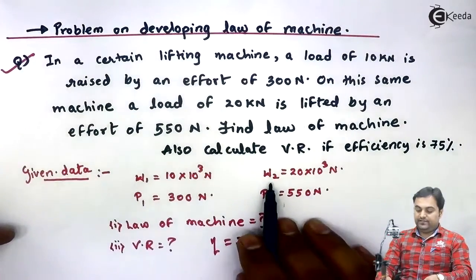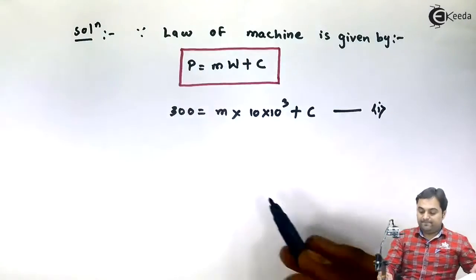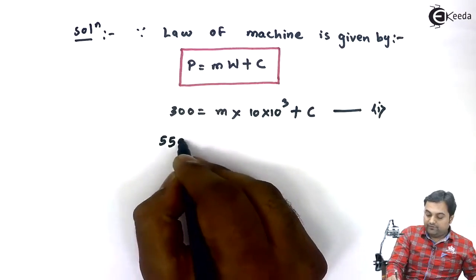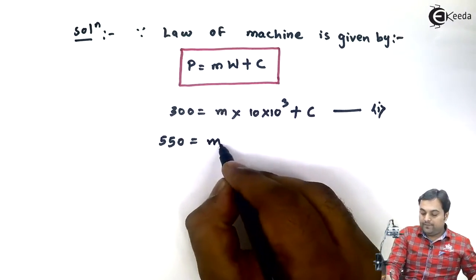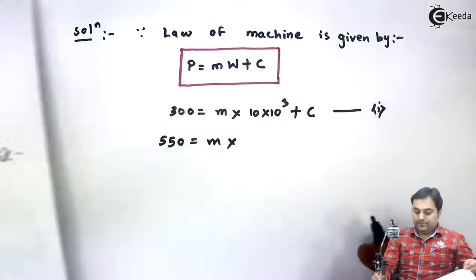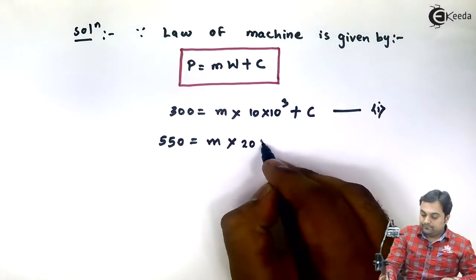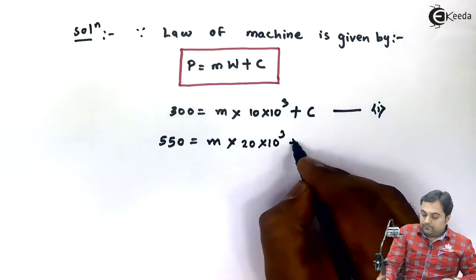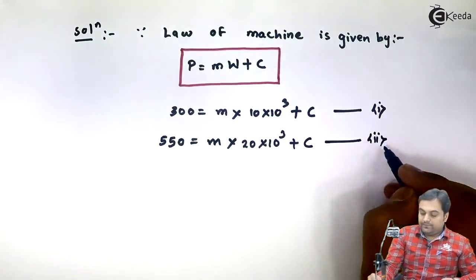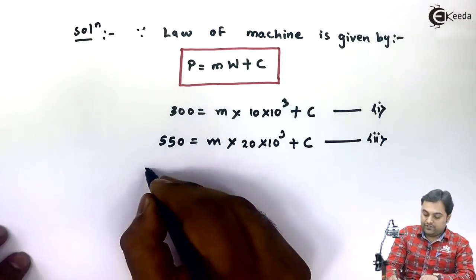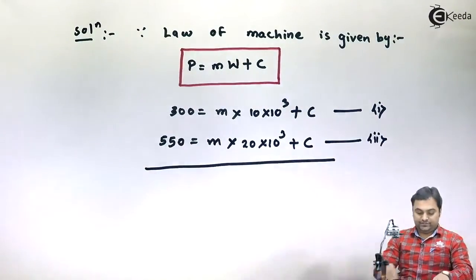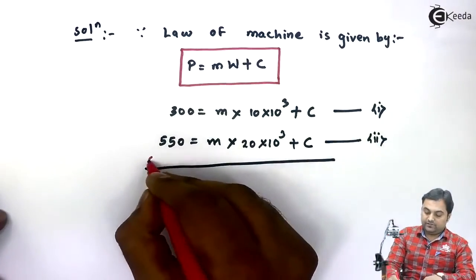Using the second condition: the effort P2 is 550 Newton when the load W2 is 20 × 10³ Newton. Substituting gives: 550 = m × (20 × 10³) + C. This is Equation 2. Equations 1 and 2 are simultaneous equations and we will solve them.